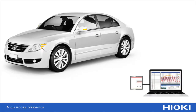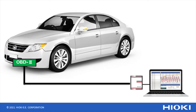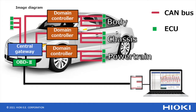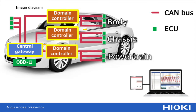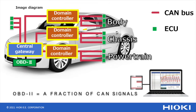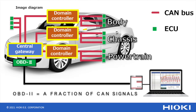How do you usually acquire CAN data? The most common method is to acquire it from the OBD2 connector. However, the central gateway and domain controllers between the OBD2 and ECUs limit the output signal, which may not be enough data for detailed analysis in modern-day research and development.